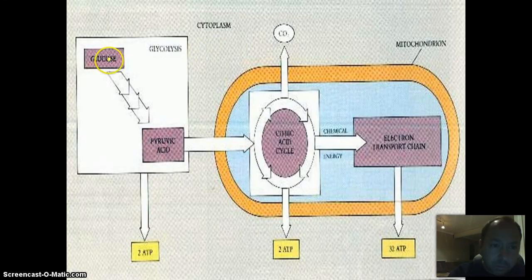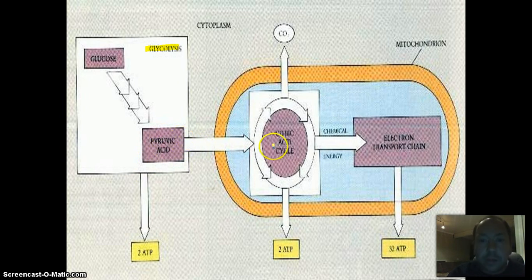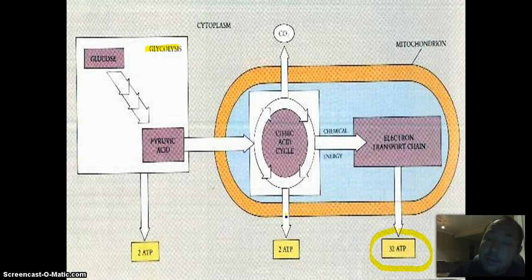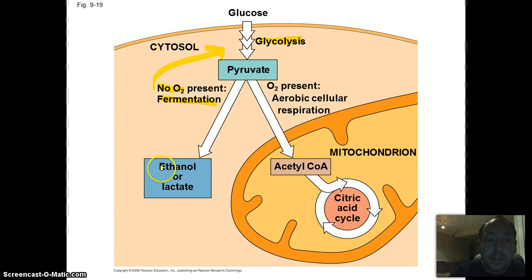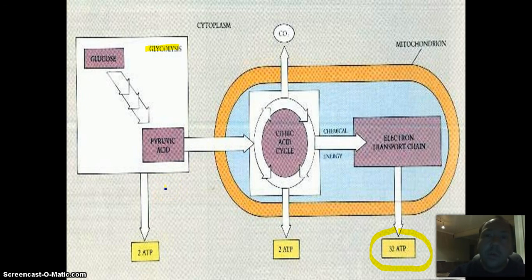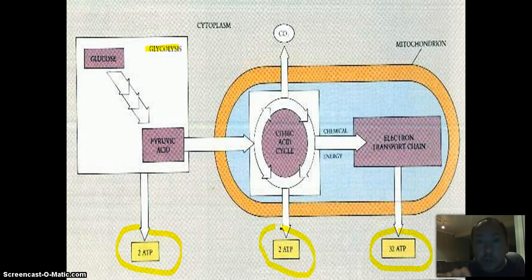Just to review cell respiration as a whole: we start with glucose, glycolysis breaks it down to pyruvic acid, and again we have that fork in the road. If we have oxygen, it'll be fed into the mitochondria — the citric acid cycle turns, we get a little release of carbon dioxide, and all that stored chemical energy is sent to the electron transport chain where we generate up to 32 ATP. If we don't have oxygen, our bodies will undergo fermentation — either ethanol or lactic acid fermentation. With cell respiration, each step generates a little ATP: glycolysis generates 2 ATP, the Krebs cycle generates 2 ATP (1 per turn), and the electron transport chain generates a total of 32 ATP. I hope that breaks down fermentation for you. Thanks for watching.